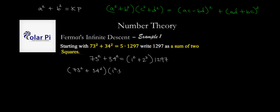And then on the right hand side we'll have 5 squared, we'll have to multiply this by itself, so we'll have 5 squared times our prime 1297.